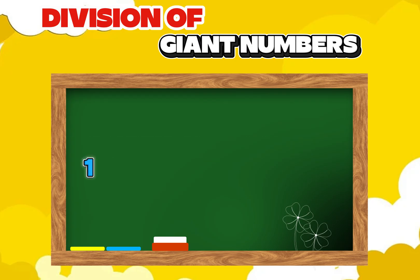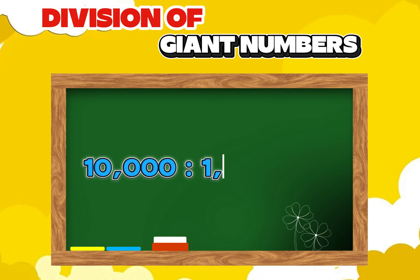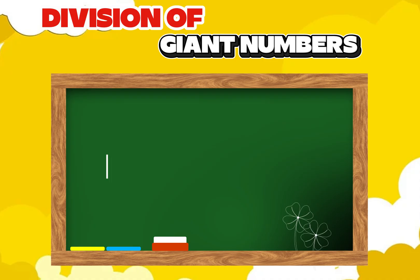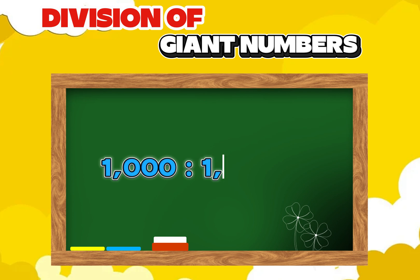Ten thousand divide by one thousand is equals two ten. One thousand divide by one thousand is equals two one.